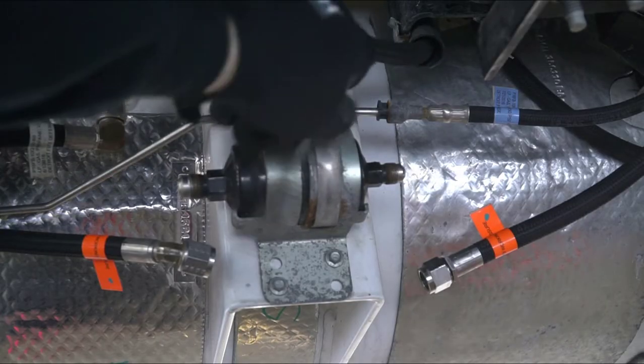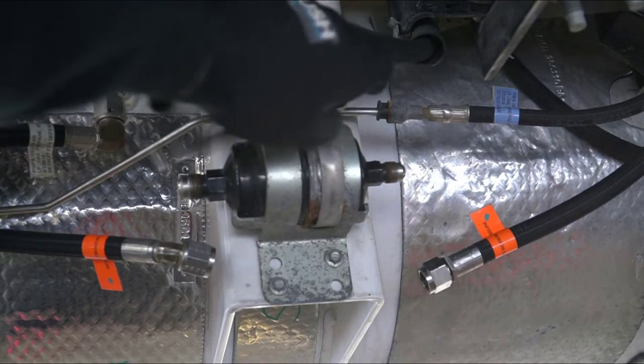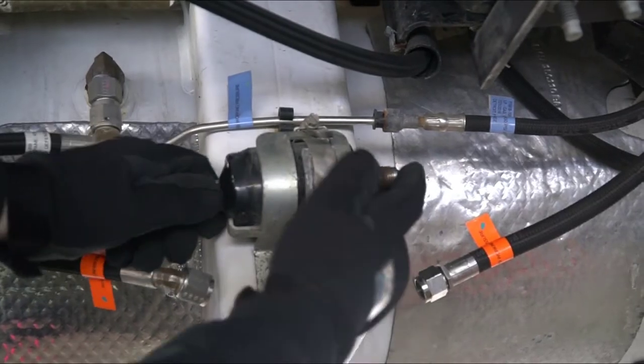Remove both ends of the supply line filter. Loosen the mounting clamp holding the filter in place and remove the filter.